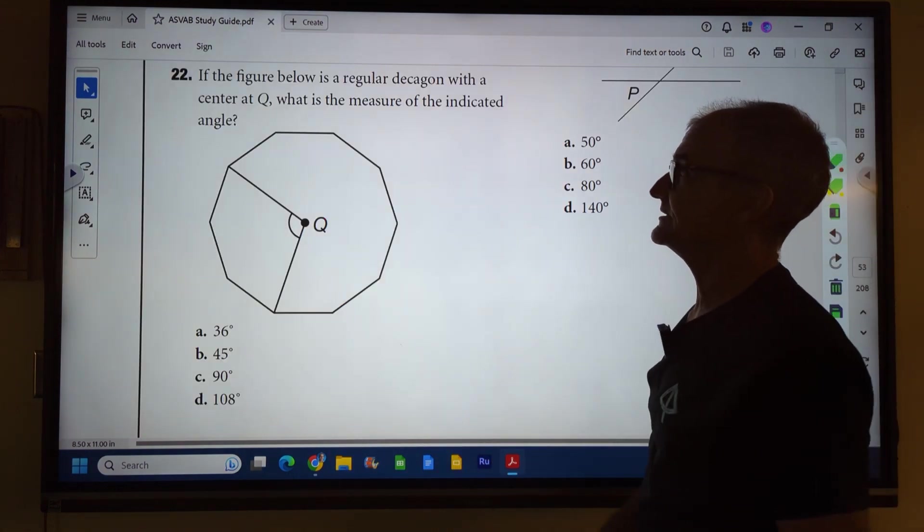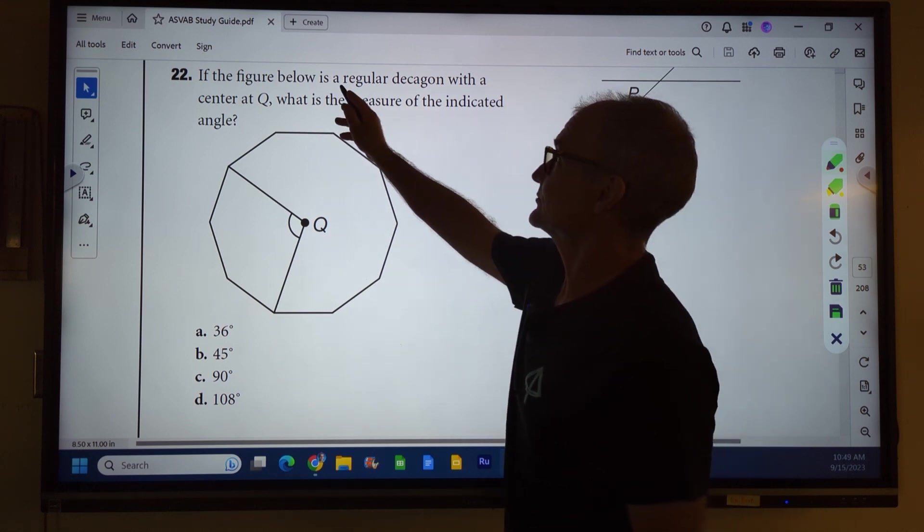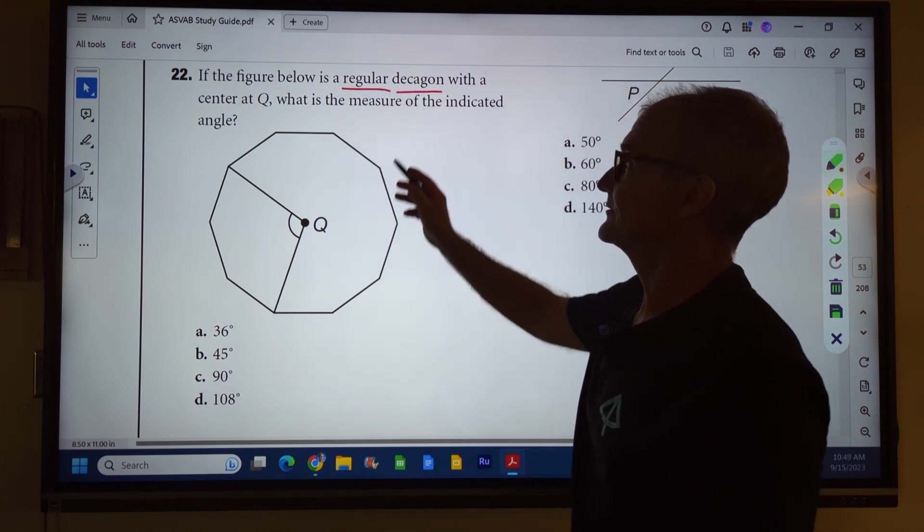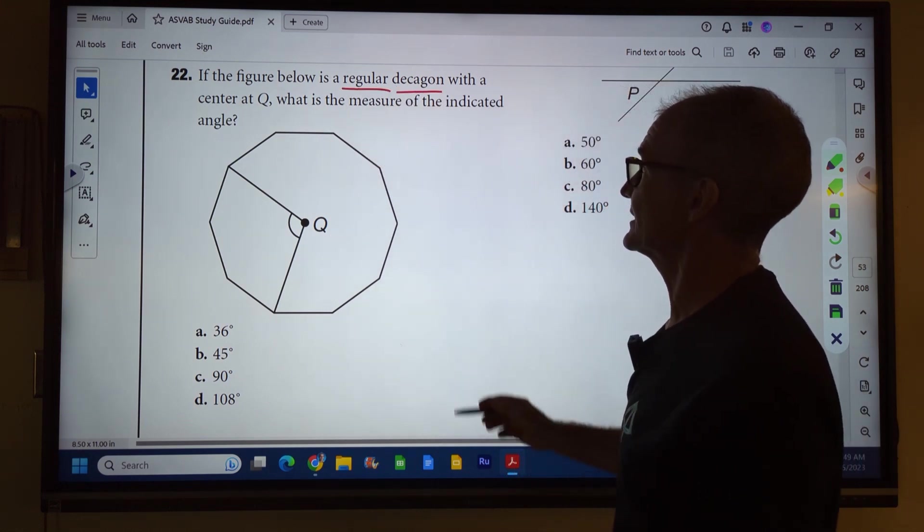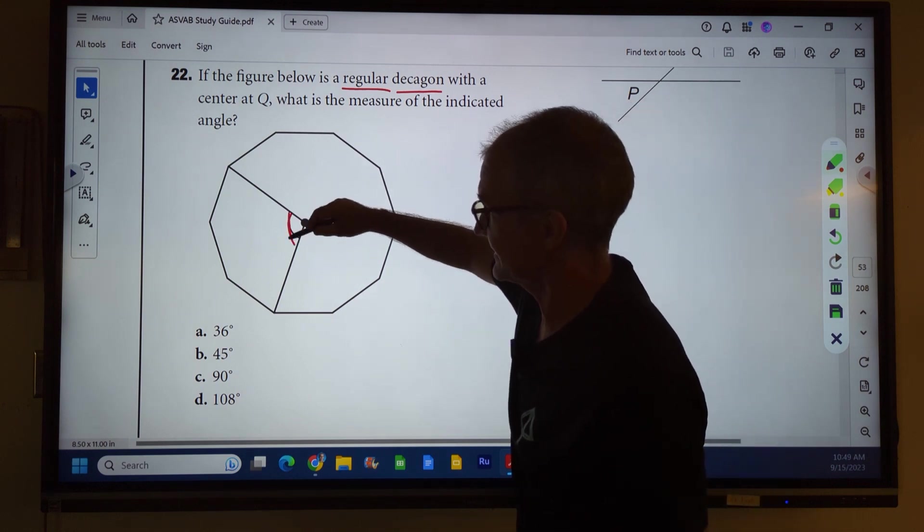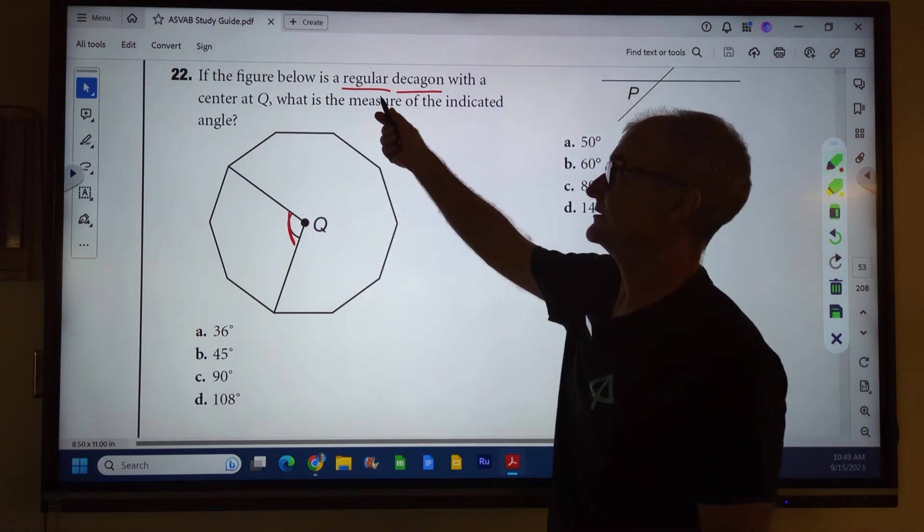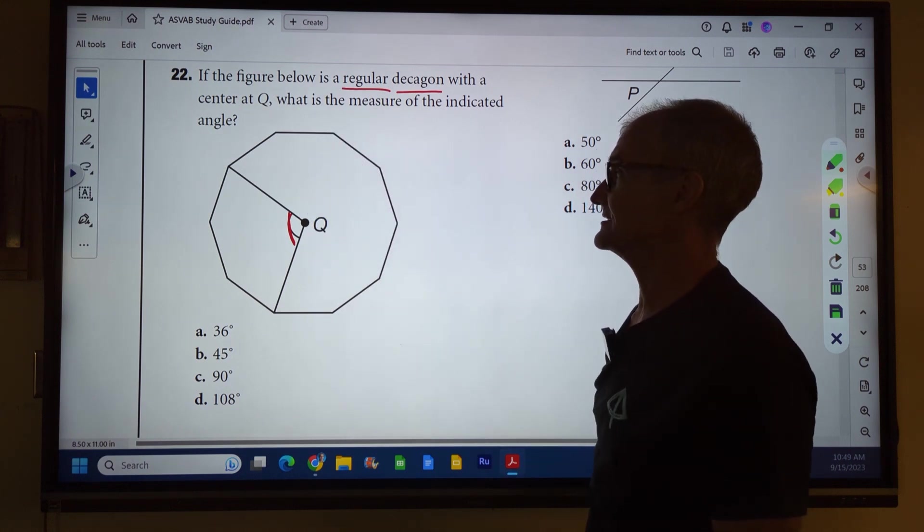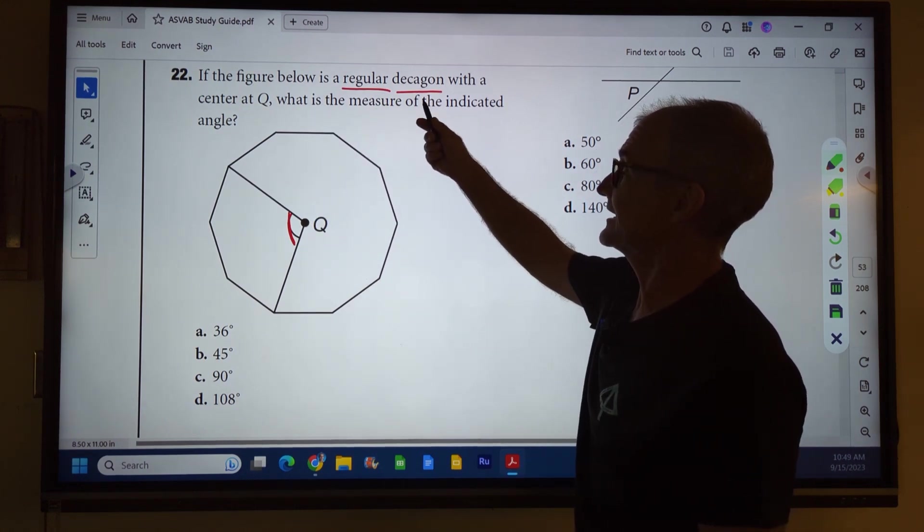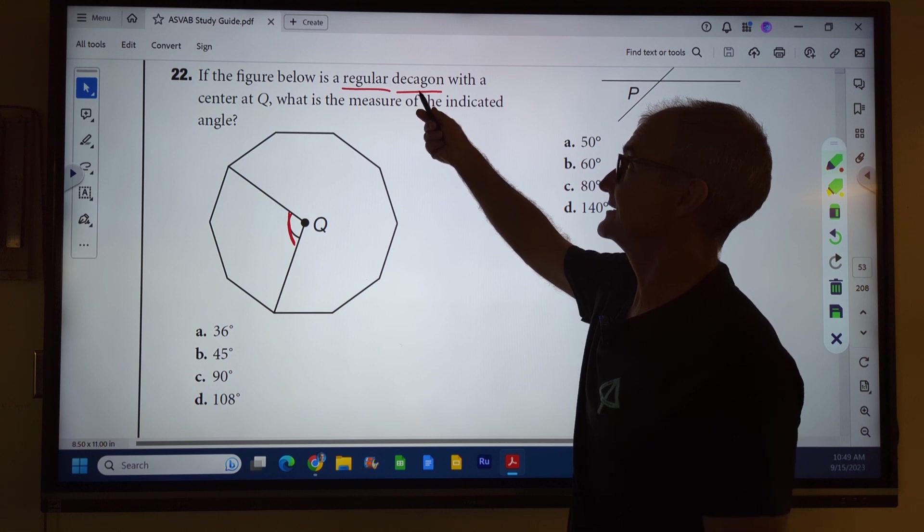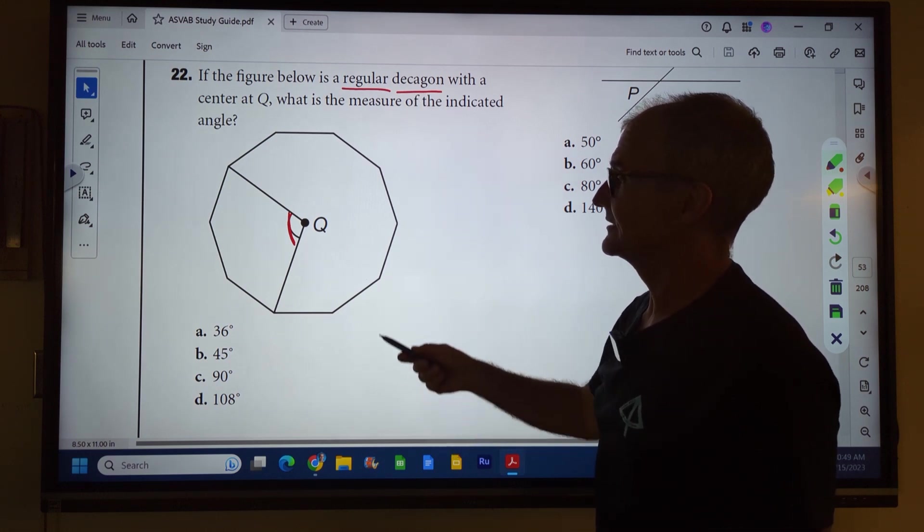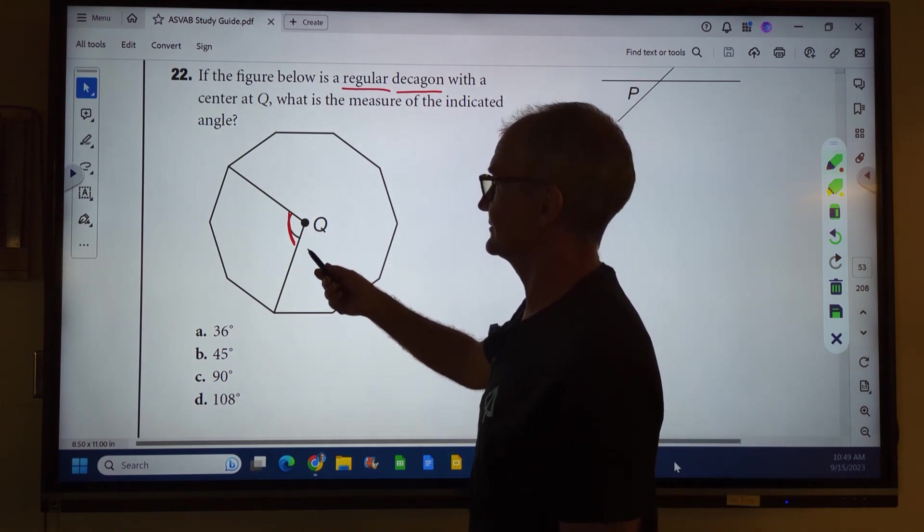Number 22: In the figure below is a regular decagon with a center at Q. What is the measure of the indicated angles? I got to highlight that angle there. There's a couple words you need to know. Regular means all sides and angles are the same. Decagon, deca means 10, it's a 10-sided figure. Then what's the measure of that angle?